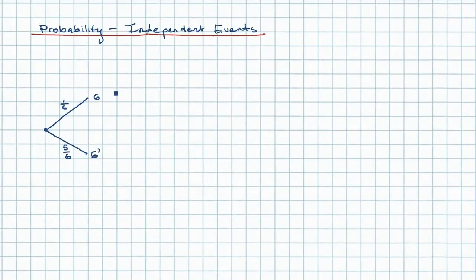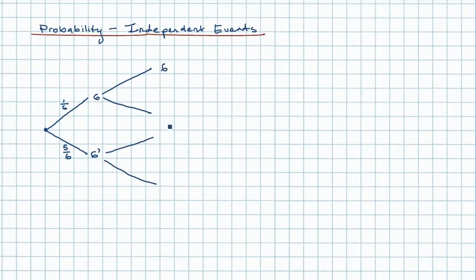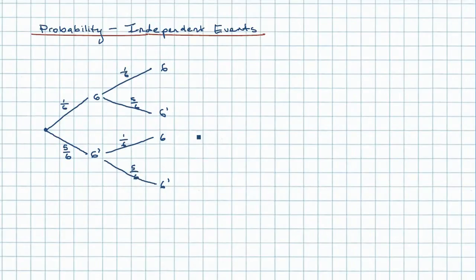If we roll the dice a second time, then we'll have our probability tree branching again. Again we'll have the same possible outcomes: we'll get a six or we won't get a six, we'll get a six or we won't get a six. Filling in the figures again, we've got one-sixth, five-sixths, one-sixth and five-sixths. So these are our probability pathways that will take us through to our final outcomes.